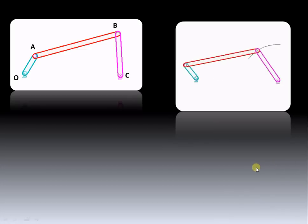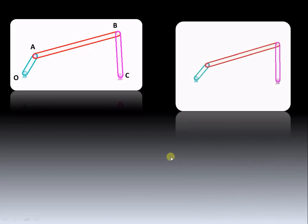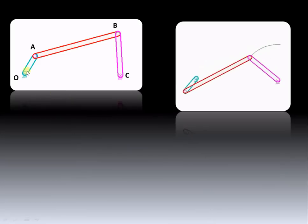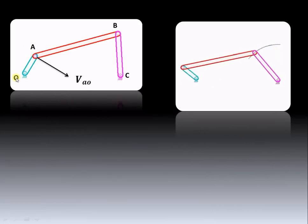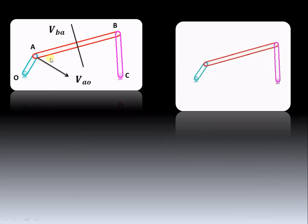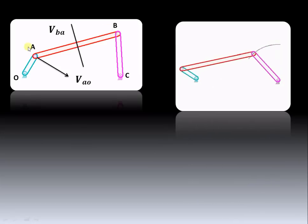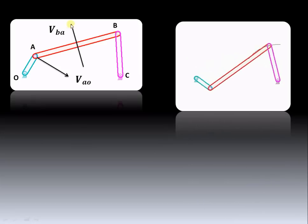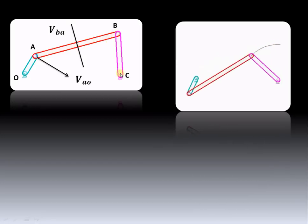Now we have to draw the velocity diagram for this mechanism. Since OA is a rotating link, the velocity of A with respect to fixed point O will be perpendicular to OA. AB is the oscillating link, and velocity of B with respect to A (or A with respect to B) will be perpendicular to link AB. Similarly, BC is also an oscillating link.